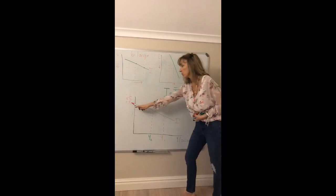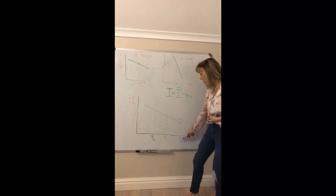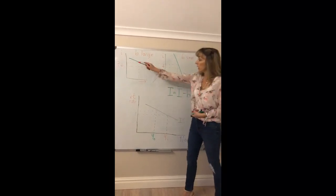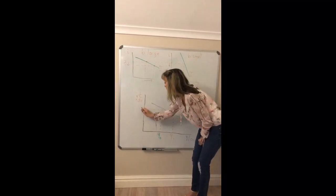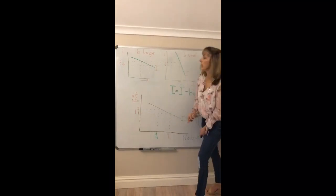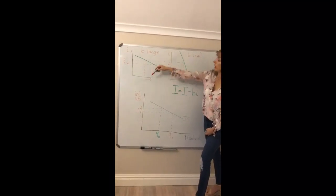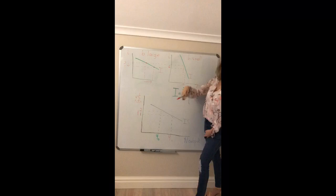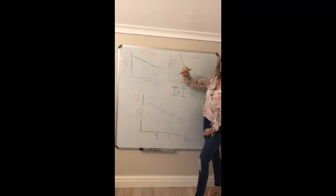So remember what you're plotting with an IS curve: it's the interest rate and income. For a given change in the interest rate, say from two to one percent, if B is large you're going to get a much bigger increase in investment and, in turn, aggregate demand and then income.